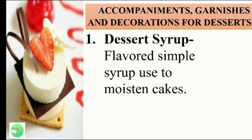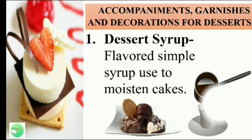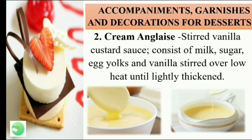Number 1, dessert syrup. Dessert syrup is a flavored simple syrup used to moisten cake, like chocolate syrup. Second, cream and glaze. Stirred vanilla custard sauce consists of milk, sugar, egg yolk, and vanilla, stirred over low heat until lightly thickened.